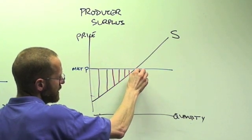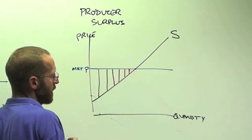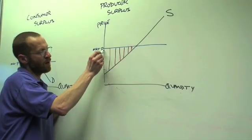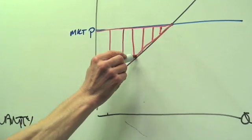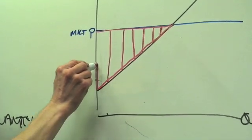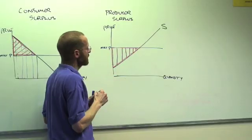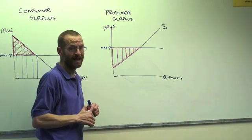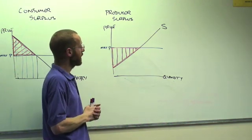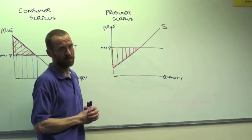Only when you get to this point here do they need to be paid the market price. So this area below the market price and above the supply curve represents the surplus that suppliers get above and beyond what they need and it's called producer surplus.